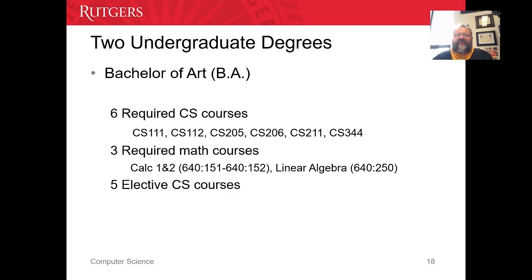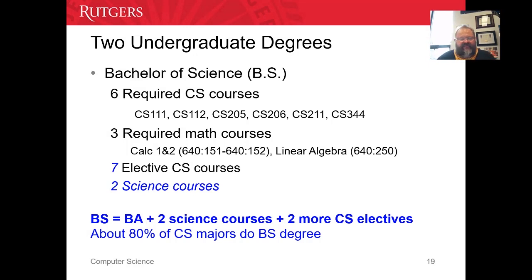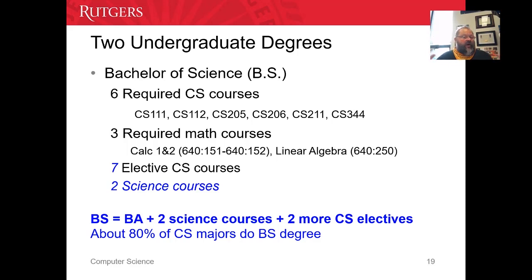Now, the Bachelor of Science. The BS is easy — you take the BA and tack on two more electives, so it's seven computer science electives instead of five, plus two science courses. We call it a year of science: in one semester you take a physics course, and in the second semester you take a second physics course. We also accept chemistry — two chemistry courses works too.